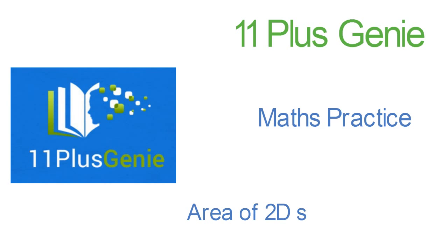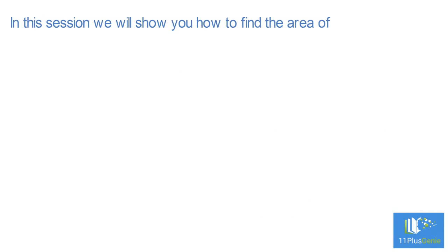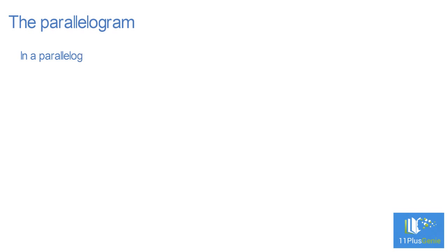Area of 2D shapes, part 2. In this session we will show you how to find the area of a parallelogram, a trapezium, and a kite. In a parallelogram, the opposite sides are equal and parallel.